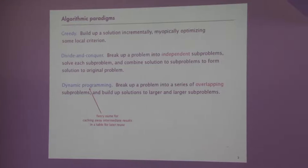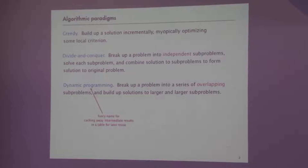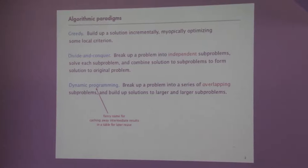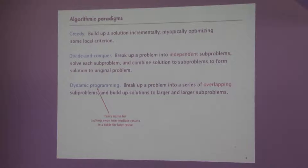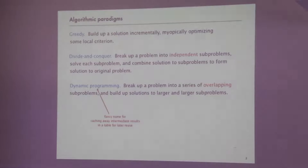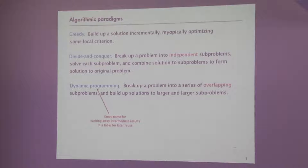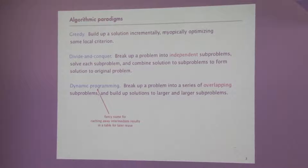It shares some commonality with divide and conquer in the sense that again we will solve a lot of sub-problems and put the solution together. The difference is that in divide and conquer, like merge sort or quick sort, you look at independent disjoint sub-problems, solve them and put together the solution, whereas here some of these problems are overlapping — they are not disjoint. That creates more challenges and we will look at how to deal with this.